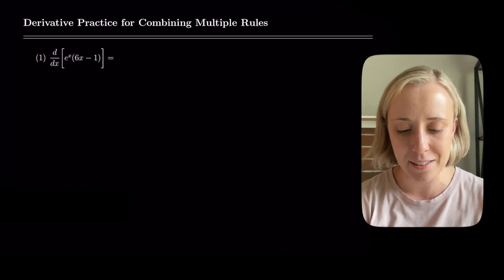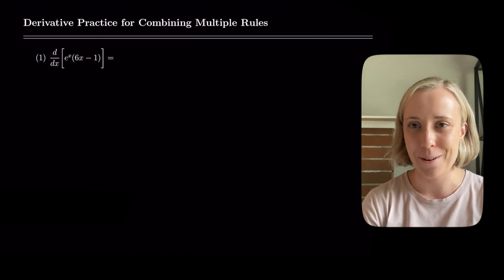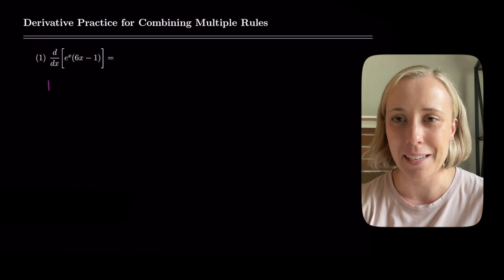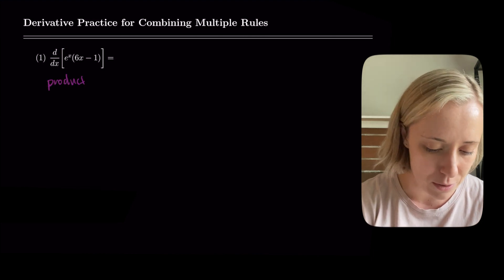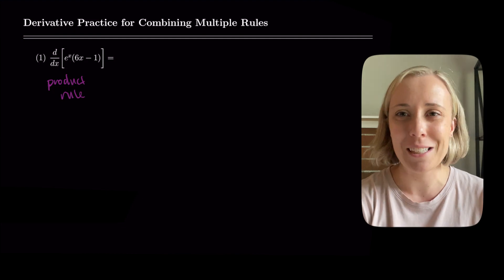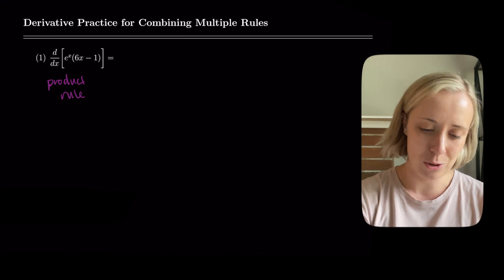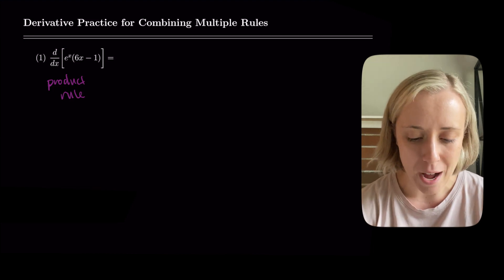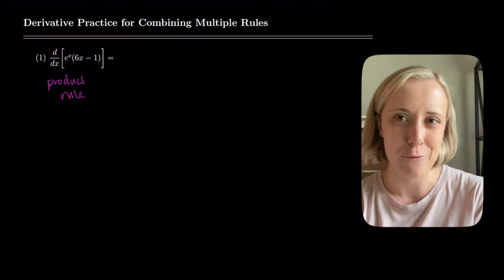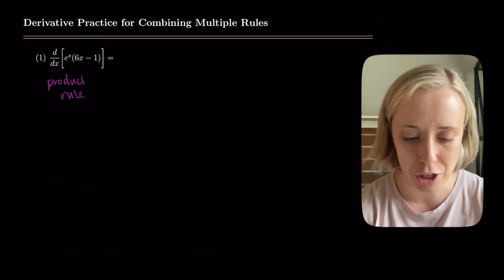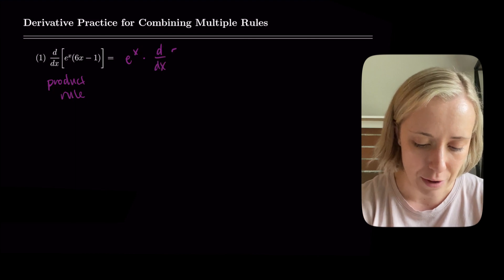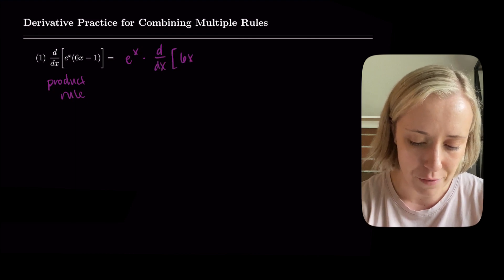Our first derivative is d/dx[e^x · (6x − 1)]. I notice right away that I said 'times' — e^x times (6x − 1) — so I'm going to use product rule. e^x is my first function and (6x − 1) is my second. I leave e^x alone and multiply it by the derivative of (6x − 1), so that's e^x times the derivative of (6x − 1).